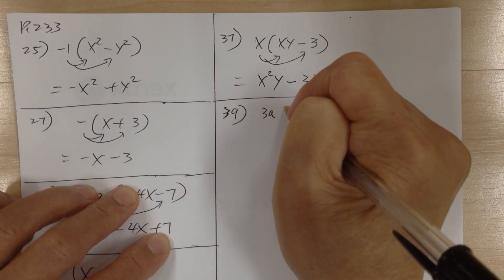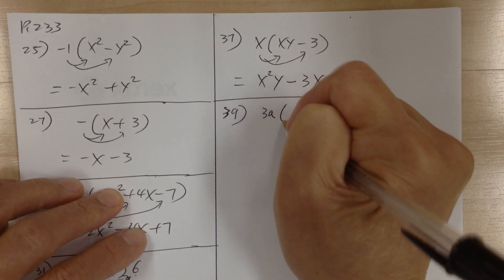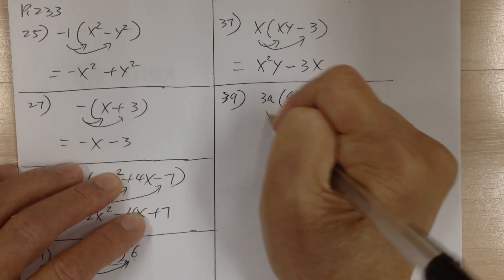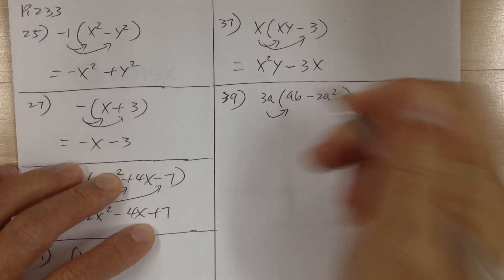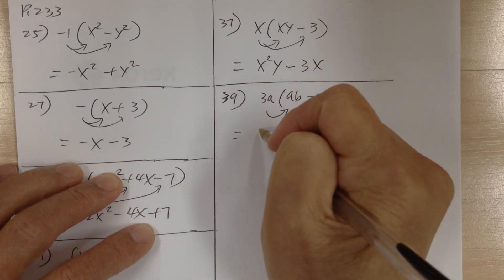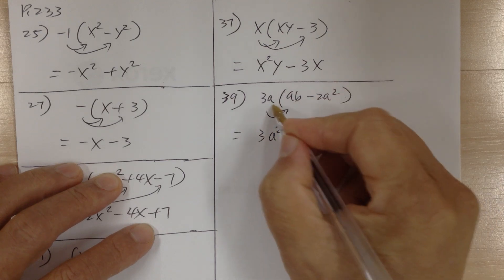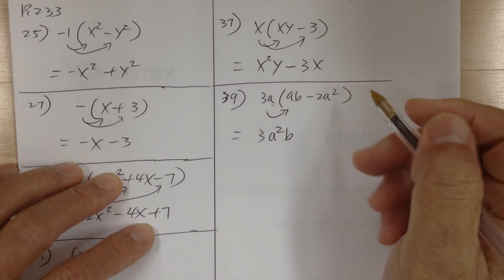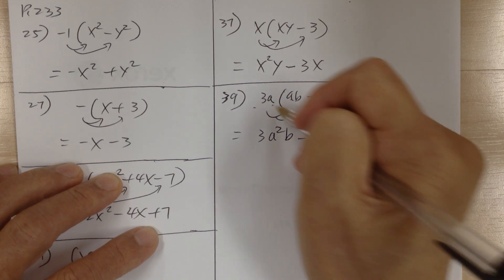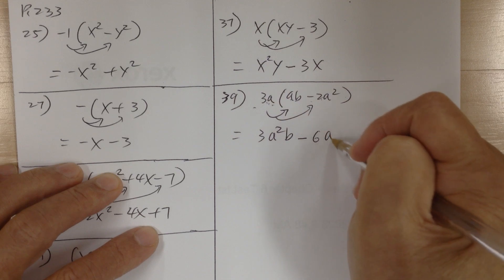Number 39. You have 3a times (ab minus 2a squared). Distribute — sign, number, alphabet. Sign is positive, number is 3, alphabet gives a squared and b, so 3a squared b. Then positive times negative is negative: 3 times 2 is 6, and a times a squared is a cubed, giving minus 6a cubed.